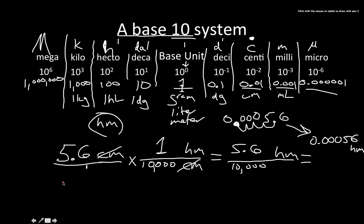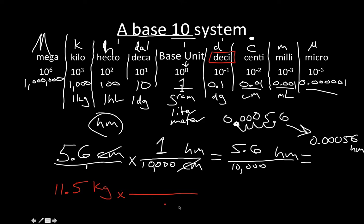Let's do one more example. Take 11.5 kilograms and find how many decigrams are in 11.5 kilograms. We start with our given information, then figure out our conversion factor. We want to get rid of kilograms, so we put that on the bottom. We want our final answer in decigrams, so we put decigrams on top. The biggest unit is kilo, so that gets the 1.